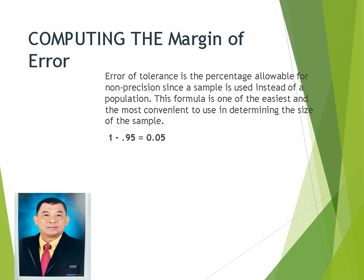So let's try to discuss about margin of error or tolerance of error. This is the percentage allowable for non-precision since a sample is used instead of a population. Slovin's formula is one of the easiest and the most convenient to use in determining the size of the sample. But of course, before identifying or computing the size, the sample size, we have to establish first our margin of error.